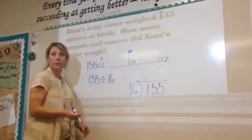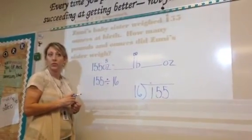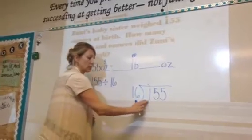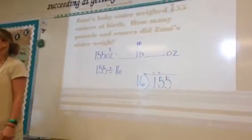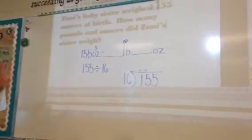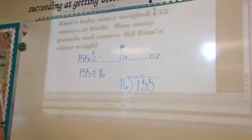16 will not go into 1. It's a pretty big deal not to write anything over your 1. 16 will not go into 15. You also shouldn't write above there. If you start writing above a number that you shouldn't write above, it could cause a place value mistake later.